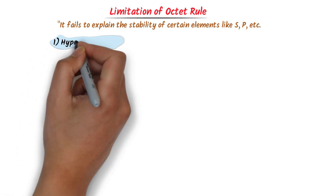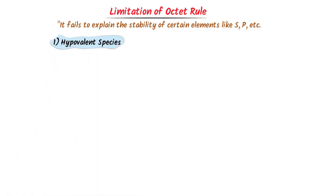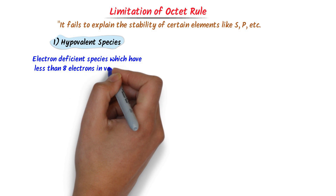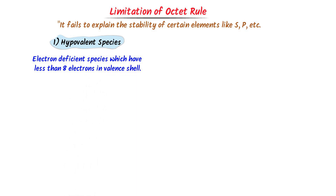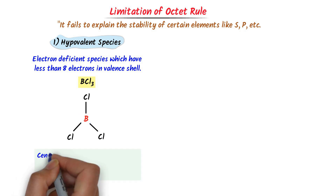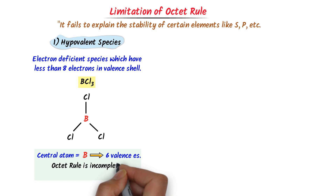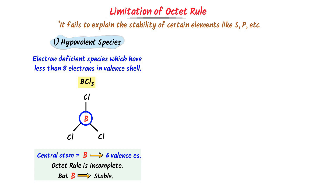By hypovalent species I mean electron-deficient species which have less than eight electrons in the valence shell. For instance, consider boron trifluoride (BF₃). In this molecule, boron is the central atom bonded to three fluorine atoms with no lone pair on boron. Boron has only six electrons — its octet is incomplete — but it is still stable. We say that boron is an electron-deficient species but it is still stable.